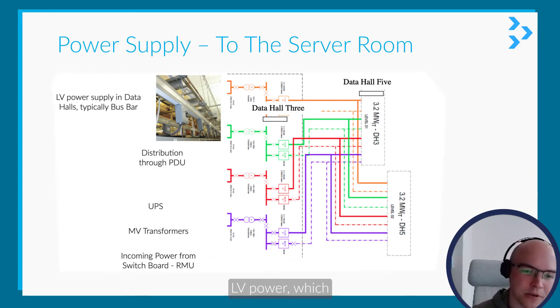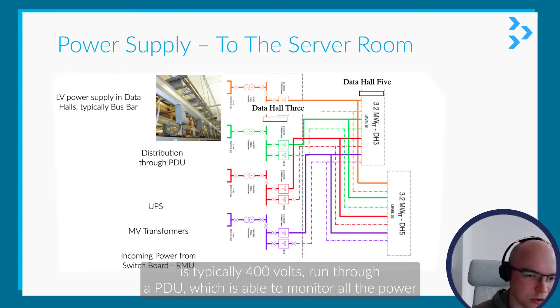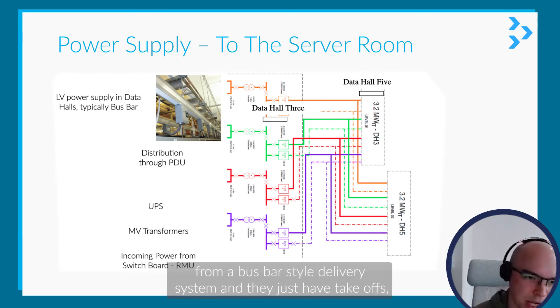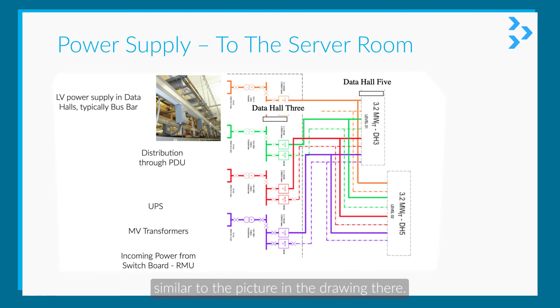LV power, which is typically 400 volts, is run through a PDU which is able to monitor all the power going to the racks. The racks are powered from a bus bar style delivery system with takeoffs, similar to what's pictured in the drawing.